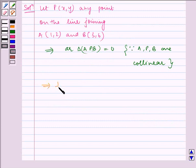Which implies half times the determinant |1, 2, 1; x, y, 1; 3, 6, 1| equals 0.